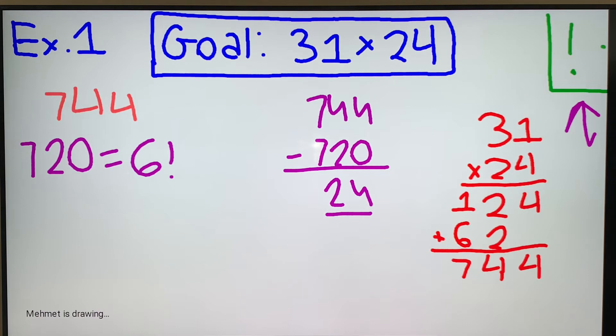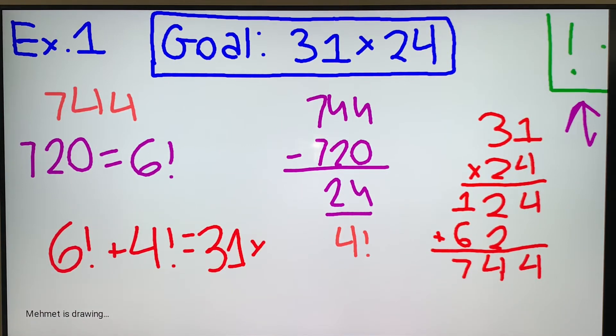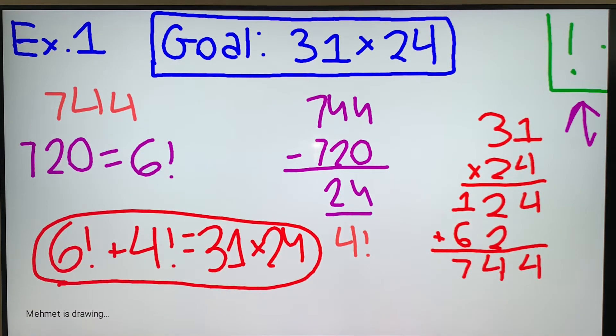24. Well, what's 24? That's just 4 factorial. So when you add 24 and 720, you get 744, and that's actually the value of our goal. So a solution here would be 6 factorial plus 4 factorial equals 31 times 24. And that would be our solution.